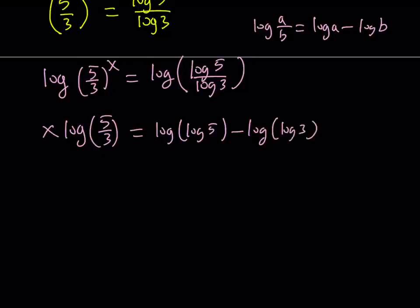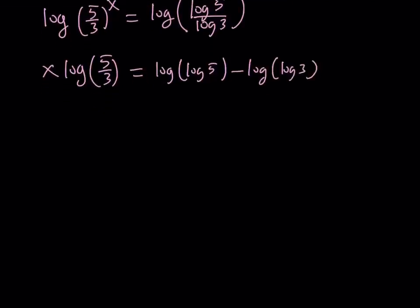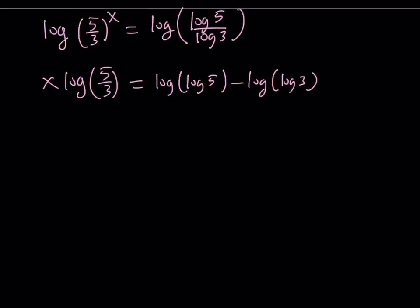By the way, when I say log, I'm talking about base 10, not base e. So, we can divide both sides by this expression, log 5 over 3. Or, I guess we could probably write it using the same property first, so we can separate the log 5 over 3 into log 5 minus log 3.